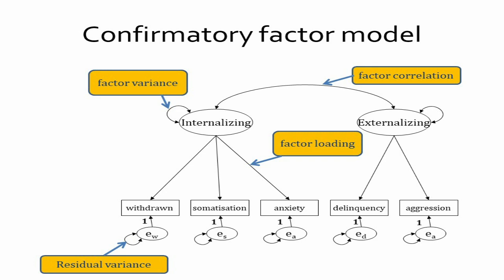Following graphing conventions, we see directional arrows from the latent variables toward the observed items — these are the factor loadings, interpreted the same as any regression coefficient. If the internalizing factor goes up by one point, the score on observed variable anxiety goes up by b points, however large the factor loading is. The latent variables also have an arrow pointing to themselves, indicating a variance — the factor variance. A two-directional arrow between latent variables indicates a factor correlation, and small latent variables attached to observed variables with a loading of one represent residual variance.